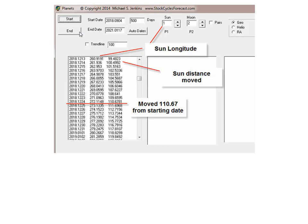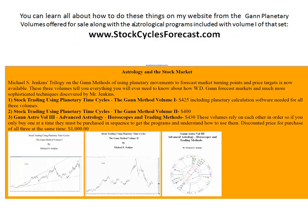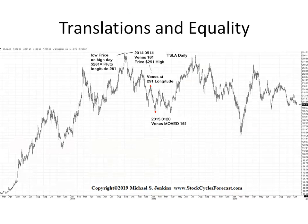You can find out much more at my website, Stock Cycles Forecast. Besides the other 11 books and courses, I have three major planetary books including the ones with all the programs — they're about $400 each. If you buy them all as one big package, they're $1,000. But you can find all that information on the website. So let's look a little more into these translations of price into longitudes and the equality of price and time.